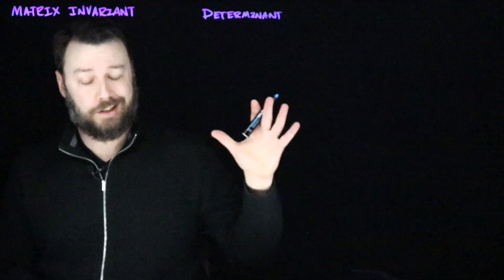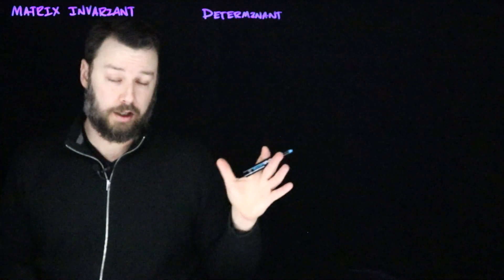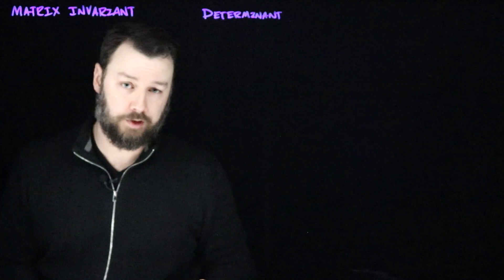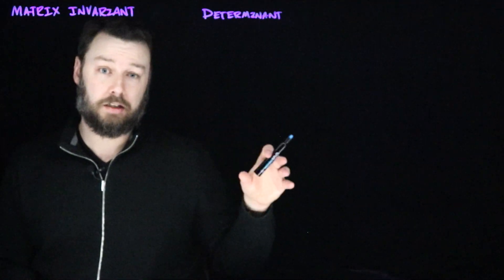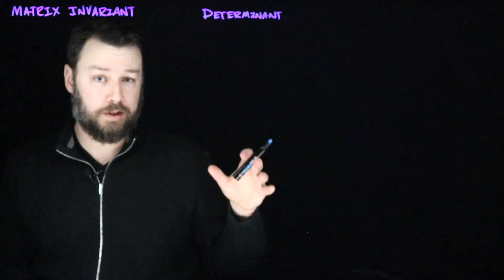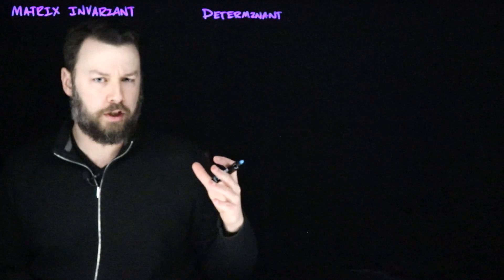So, if you think of the trace as being sums of things, the determinant is the product of things. And in this case, the things are the eigenvalues of the matrix, which we'll talk about in a couple of lectures. But whereas the trace is kind of easy to think about how to compute and how to reason about, the determinant is a little bit more complicated.